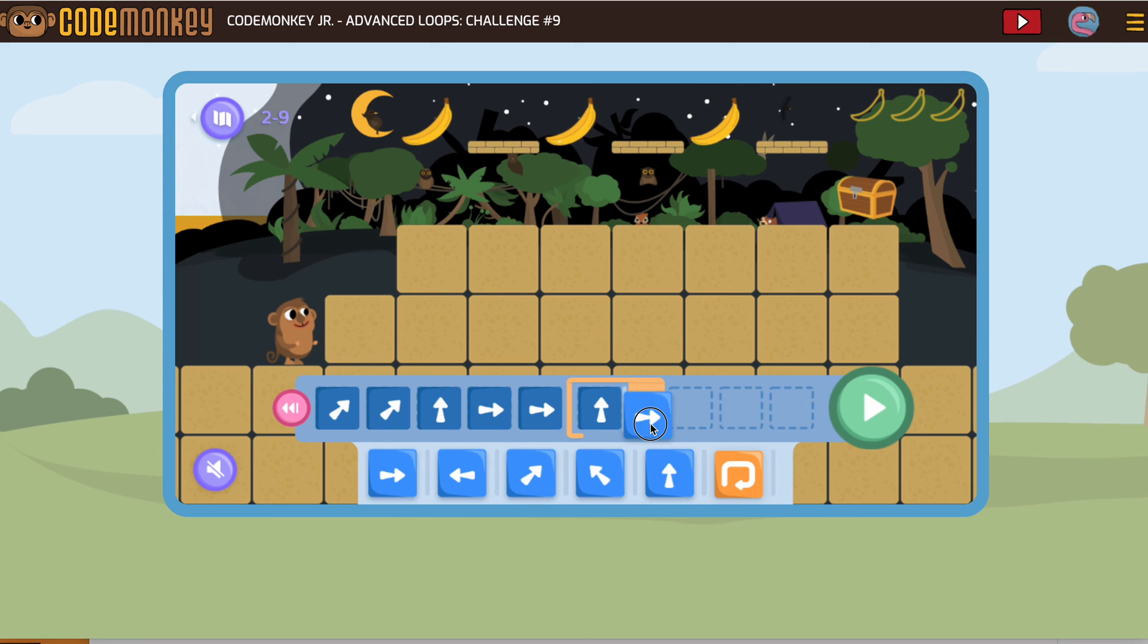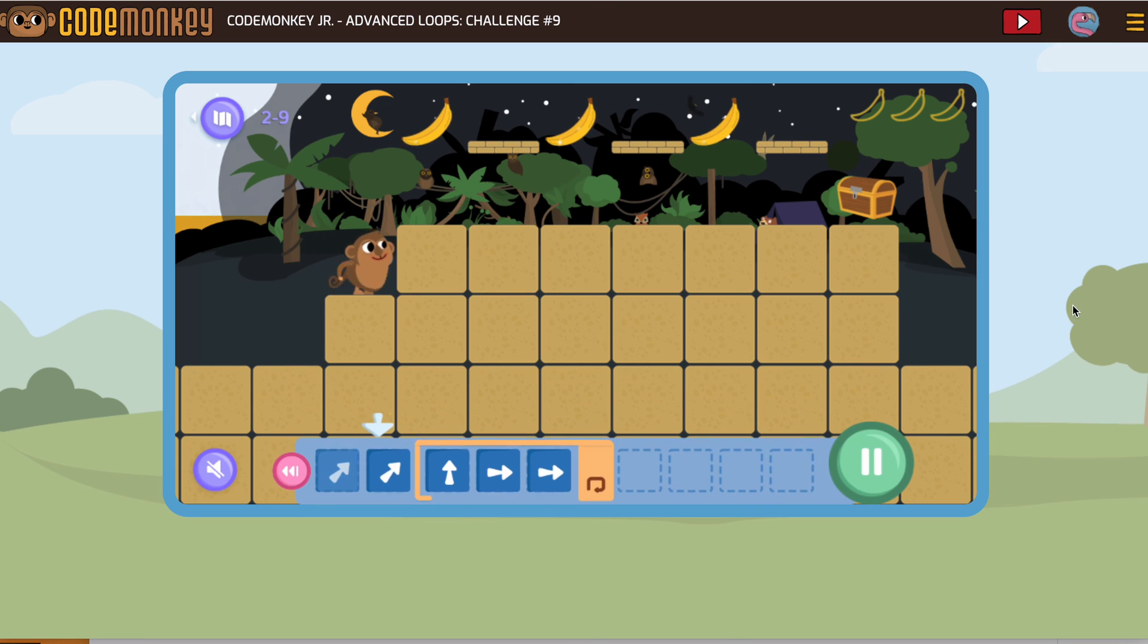Jump up, go this way, go this way. Then I'm going to take those three away because I just put them inside my loop and we should make it to the treasure.